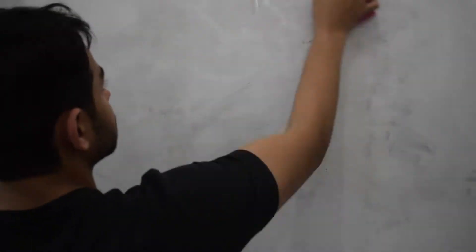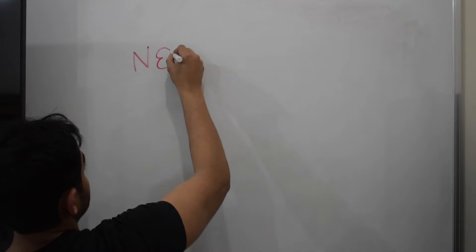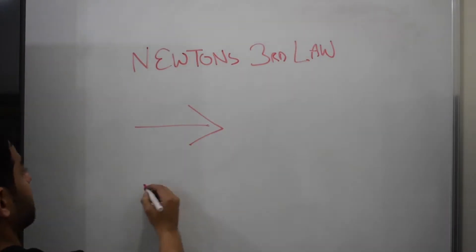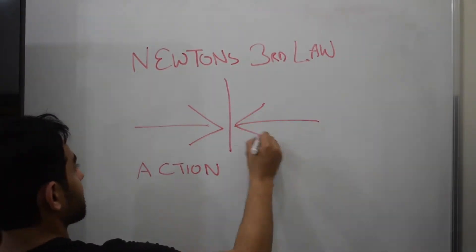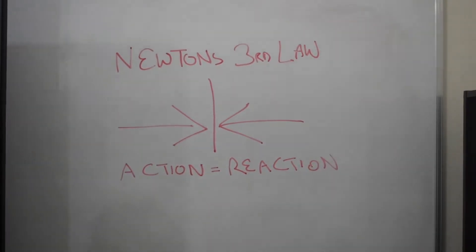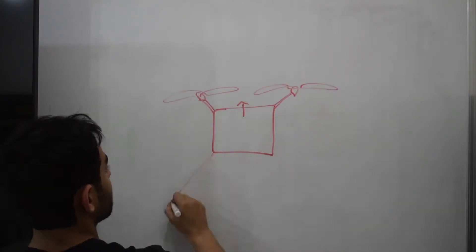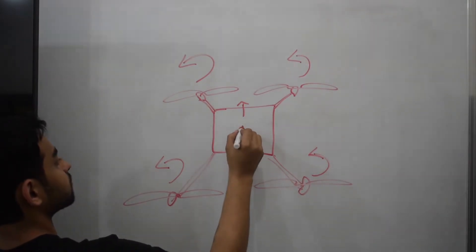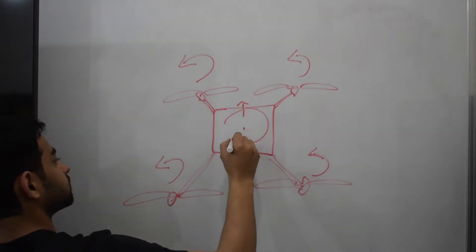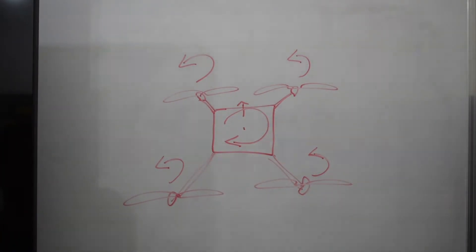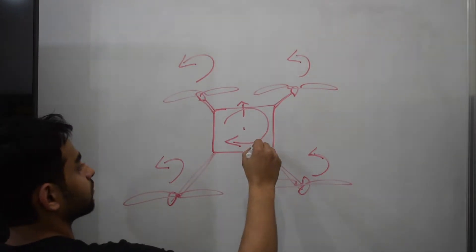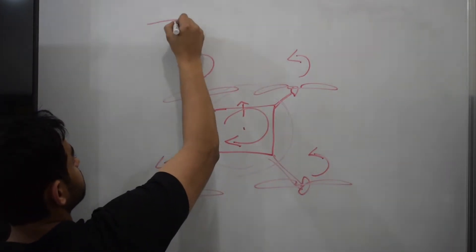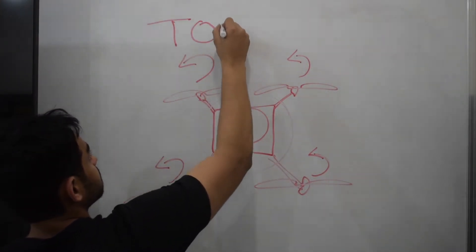Let's understand why. I am sure everybody has heard of Newton's third law of motion, which states every action has an equal and opposite reaction. If all the rotors were moving counterclockwise, the opposite action on the body of the drone would cause it to spin clockwise. This force is called torque.